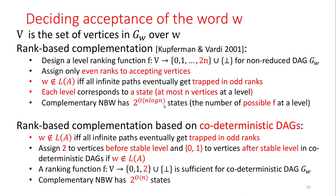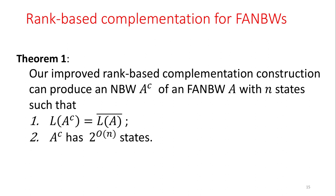In our improved rank-based complementation, we deal with codeterministic DAGs. We use the same trick to decide whether w is accepted by A, except that the maximum rank for vertices in a codeterministic DAG is 2 instead of 2n. Therefore, the range of a ranking function is from 0 to 2, or bottom. We can then prove that our complementary Büchi Automaton has only exponentially many states. Theorem 1: our improved rank-based complementation construction produces a complementary Büchi Automaton A^C of A with only exponential blowup in the states.